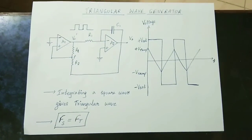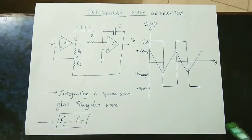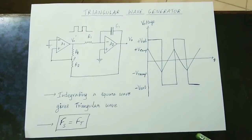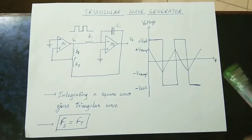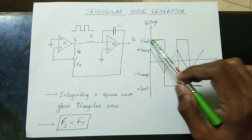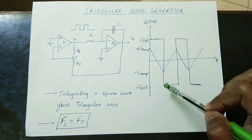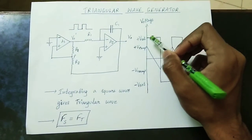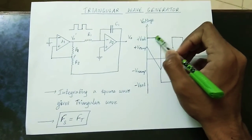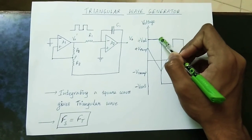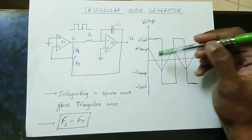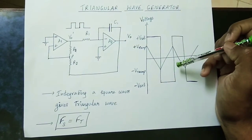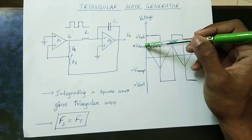Let me explain the simple concept clearly. The input is a square wave, and the output is a triangular wave. In the square wave, plus Vsat and minus Vsat alternate. In the triangular waveform, a ramp signal is produced. When the square wave is at plus Vsat, the ramp is positive.